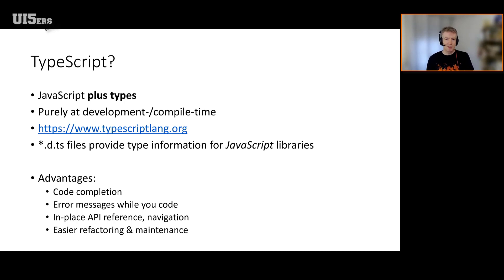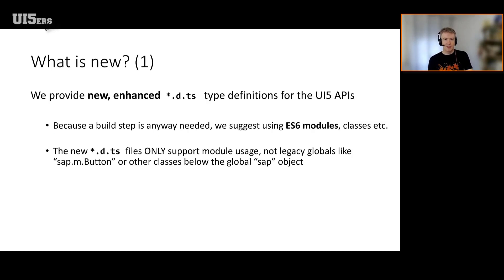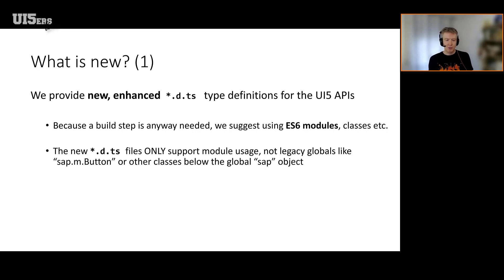You also get better refactoring and maintenance when you have a description of what objects you're actually handling. The new DTS files we are providing are exclusively for ES6 module syntax and ES6 classes syntax. We will not support using globals anymore, like writing just 'sap.m.Button' using global objects, which has been discouraged for a long time. Going away from these practices is useful for better performance because we can bundle and optimize much better. This has been a long-time goal for us.